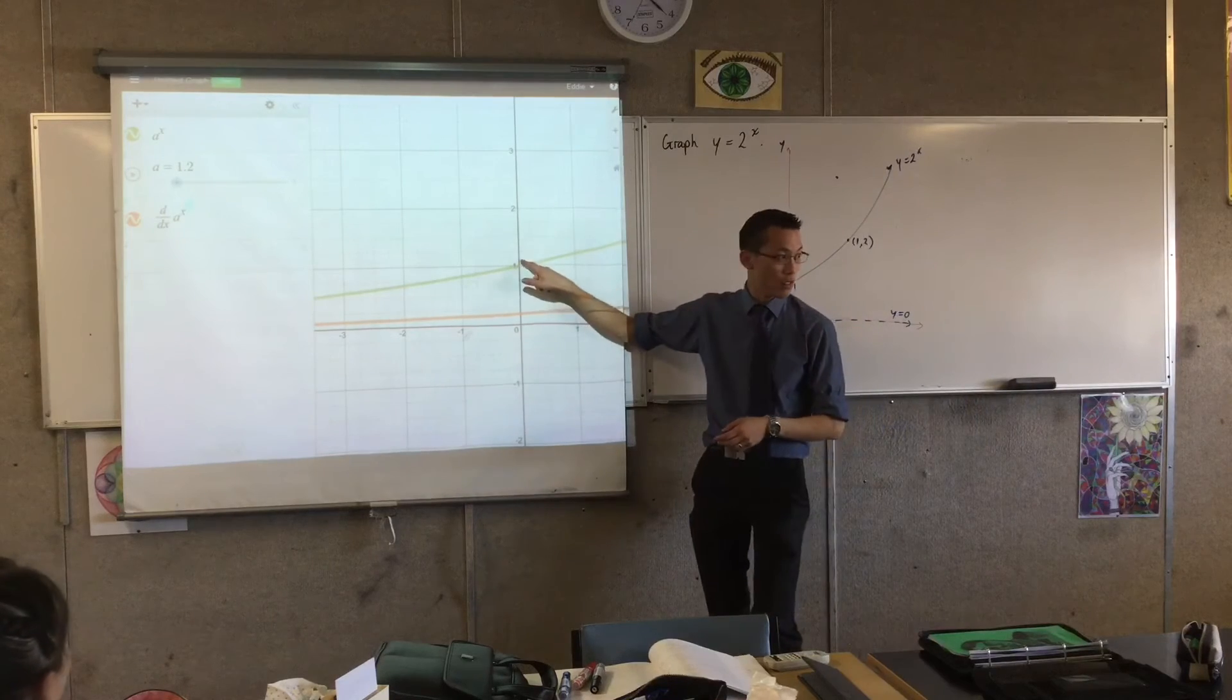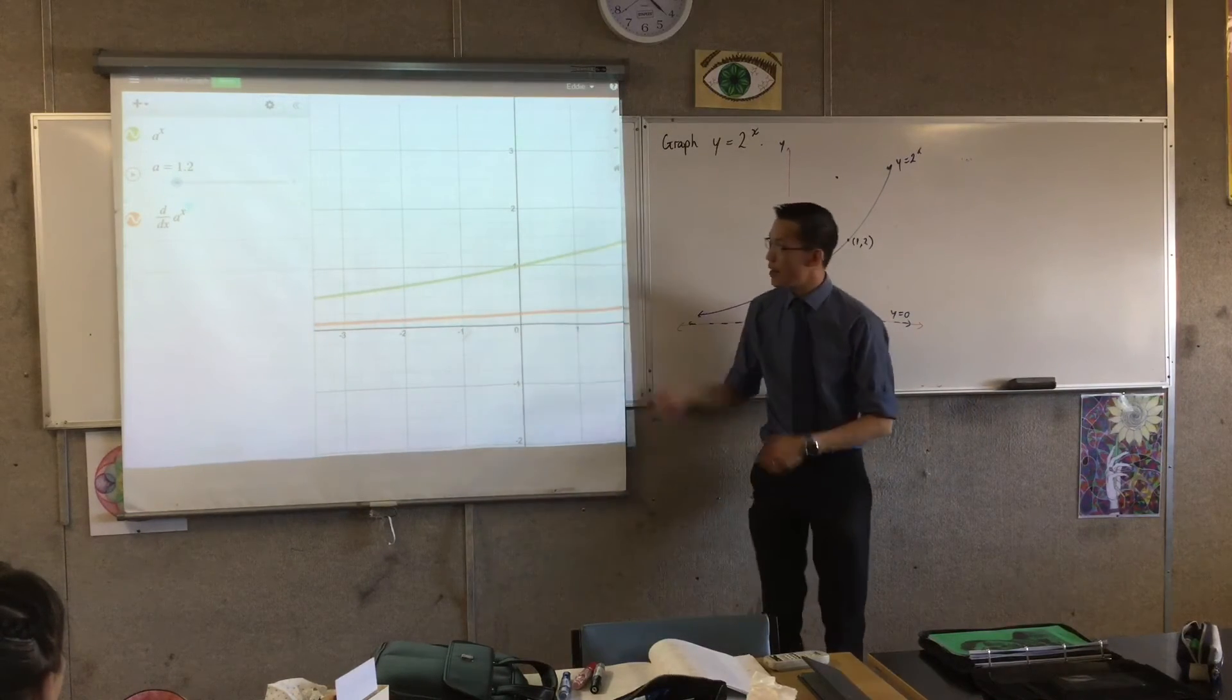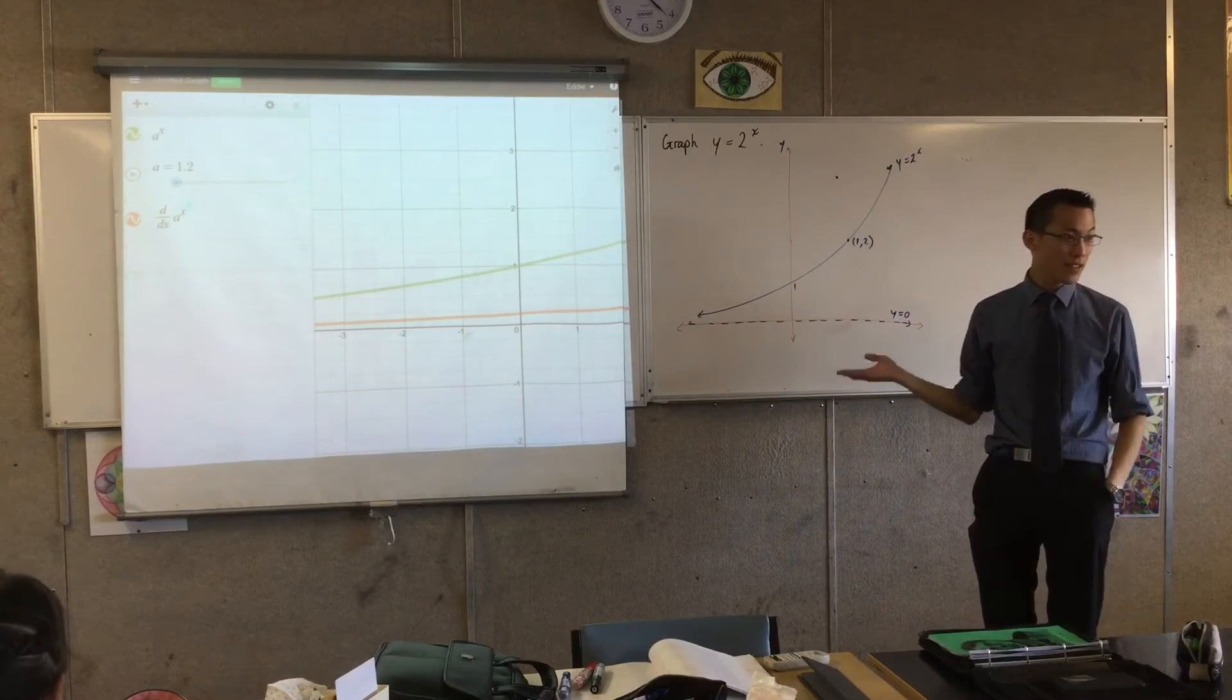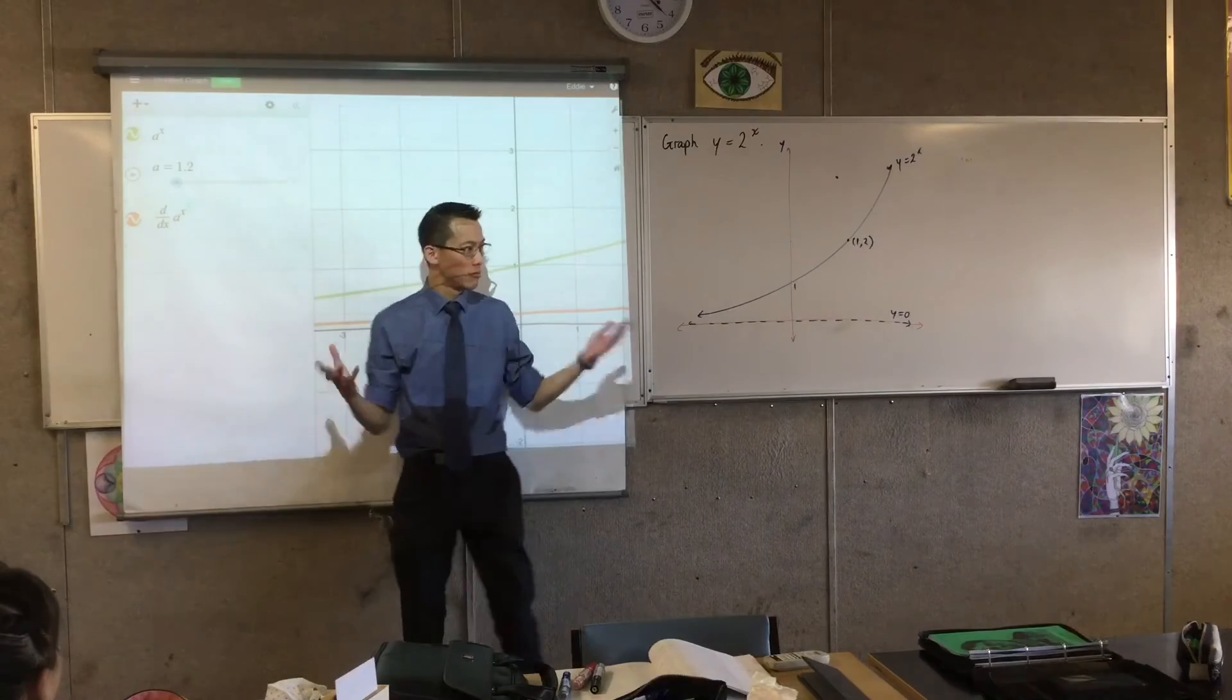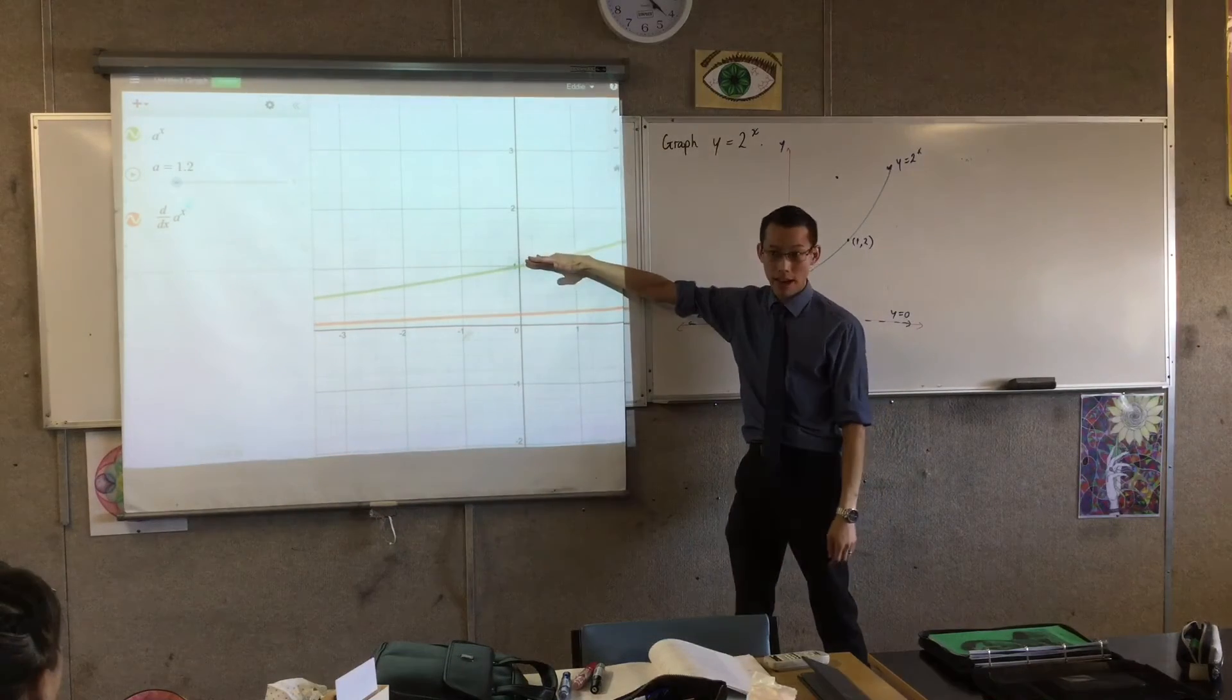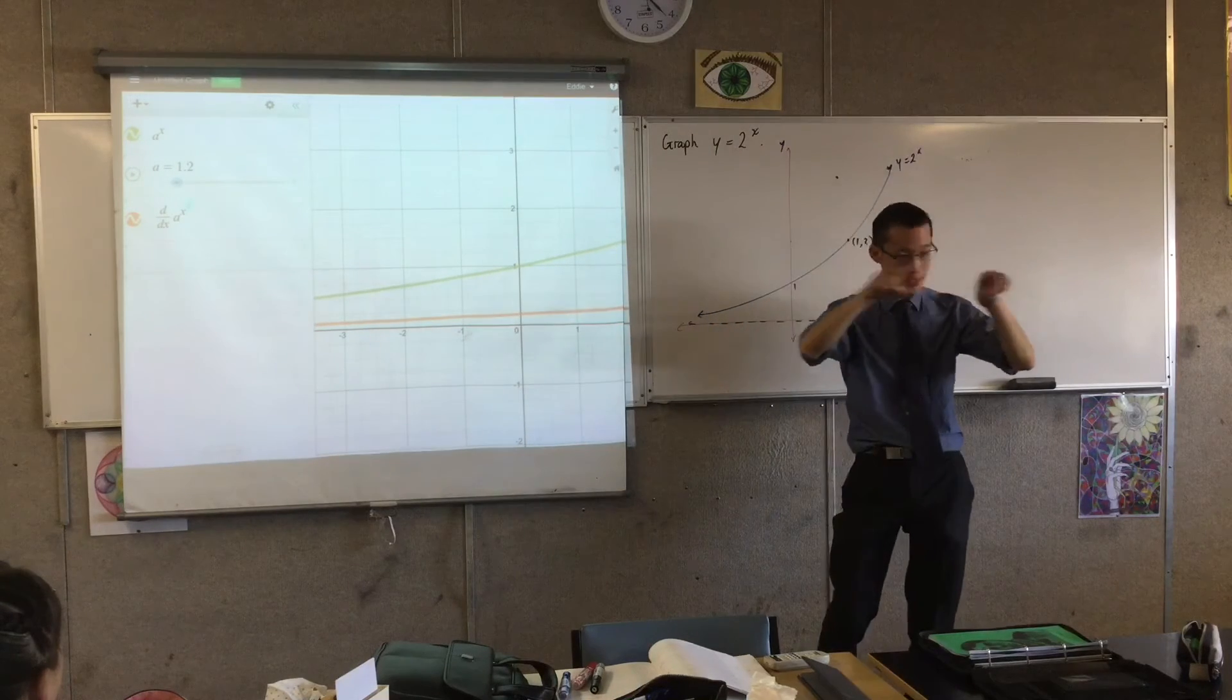It's gone lower, hasn't it? Right? And it's also gone shallower. Now, I stopped short of going all the way because I hope you can see there's some limiting behavior here. You actually know what's going to happen when I drag this all the way back to one where I started. What will happen? Yeah, if this is a horizontal line, the derivative will just be zero because it's not increasing or decreasing.